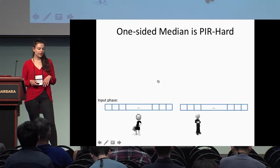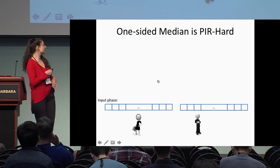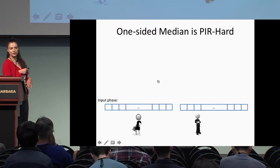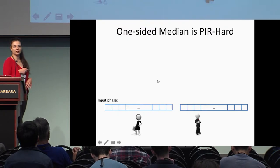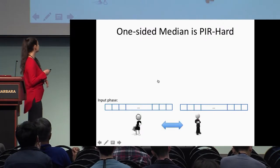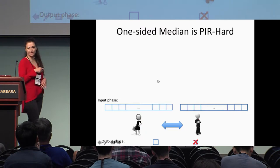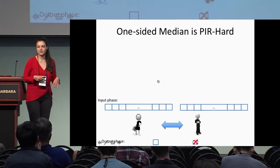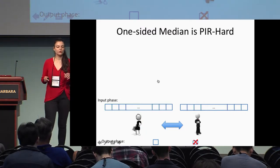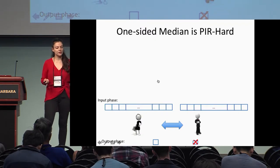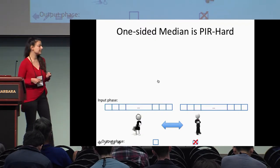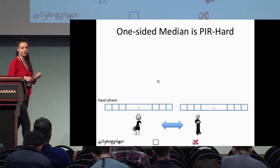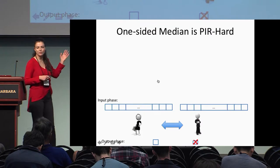Now I'll show a simple example of why the one-sided median problem is PIR-hard. In the median protocol, two parties have a list of numerical entries and want to find the median of the combined set. It's one-sided, so only Alice gets the output. To prove the one-sided median is PIR-hard, we construct a PIR protocol making only a single oracle call to the median functionality.